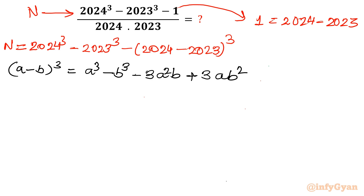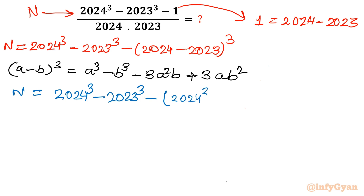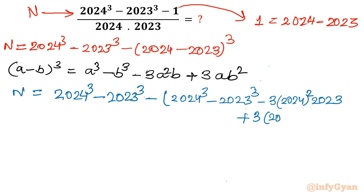Let's apply this identity. So the numerator equals 2024³ − 2023³ minus [the expansion of (2024 − 2023)³], which gives us: 2024³ − 2023³ − 3·(2024²)·(2023) + 3·(2024)·(2023²). This is our numerator.